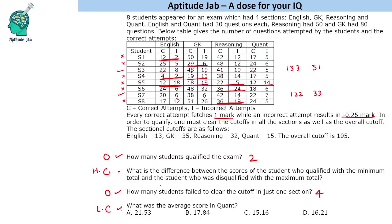Now the third question: what is the average score in Quant? This doesn't mean you calculate each score — just add the totals. Correct attempts total: 41, 63, 80, 92, 100, 156 — that's 156 correct. Incorrect attempts: 11, 16, 21, 35, 41, 53 incorrect. That gives 156 minus 13.25, roughly 142.75, divided by 8 — approximately 17.84. So the average Quant score is slightly less than 18.